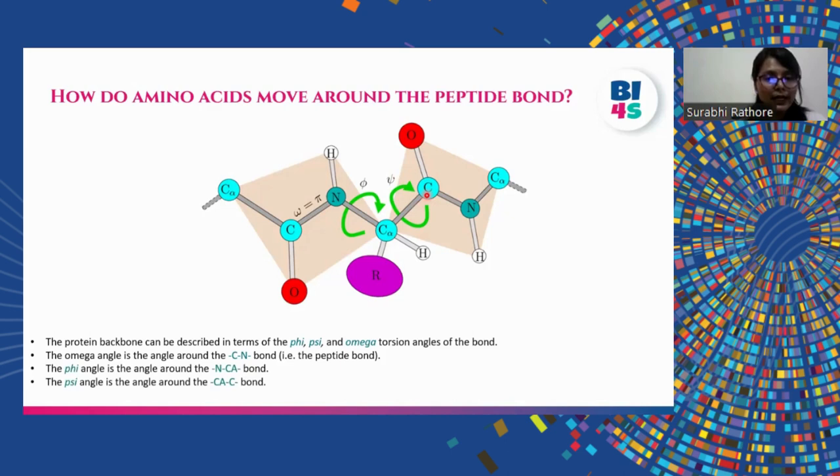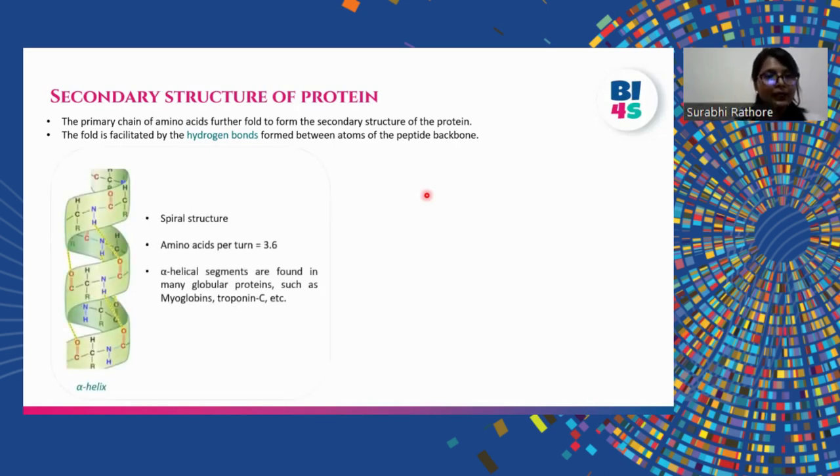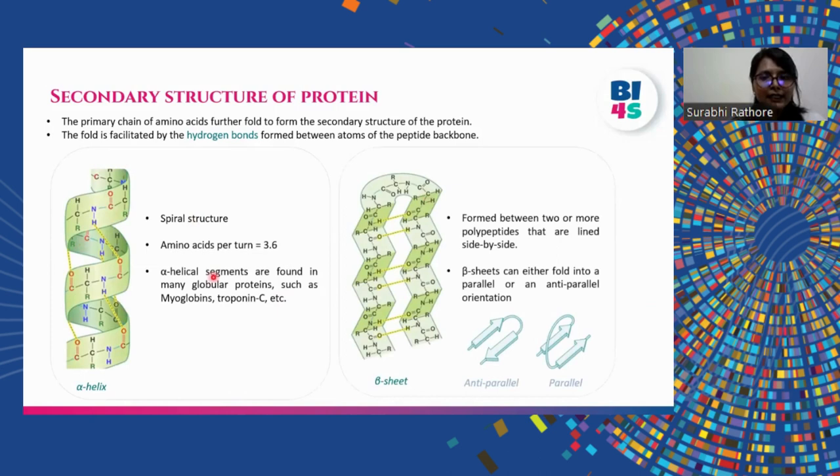These angles are also known as dihedral angles and can rotate from minus 180 degree to plus 180 degree. So this movement allows the primary structure of protein to fold into a secondary structure, which is further stabilized by hydrogen bonds between the atoms of the peptide backbone. Based on different hydrogen bonding networks, the primary sequence of a protein can either fold into an alpha helix or fold into a beta sheet. An alpha helix takes up a spiral shape which is stabilized by the hydrogen bonds between every first and fourth amino acid, while a beta sheet is stabilized by the hydrogen bonds formed between two or more adjacent strands. These strands can either fold into a parallel orientation or an anti-parallel orientation.